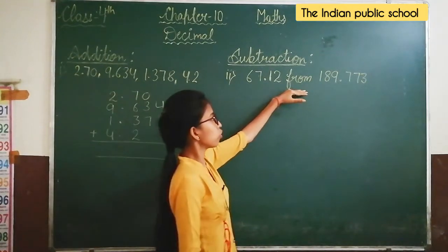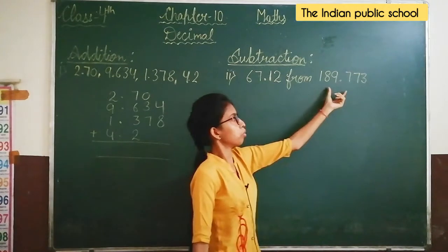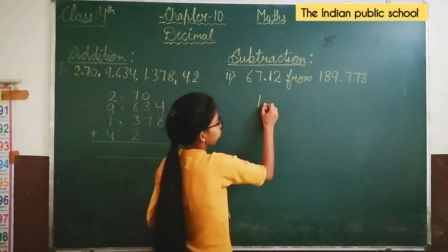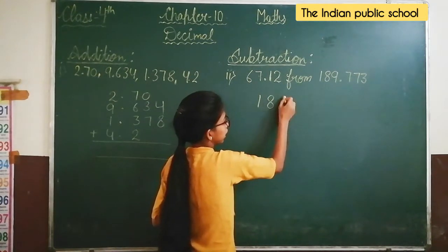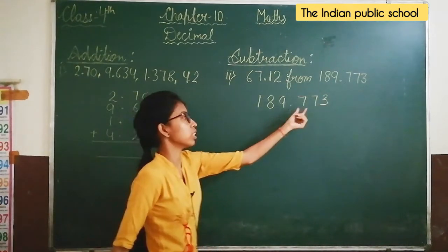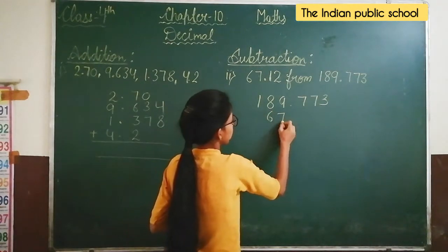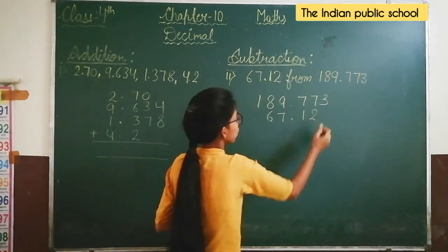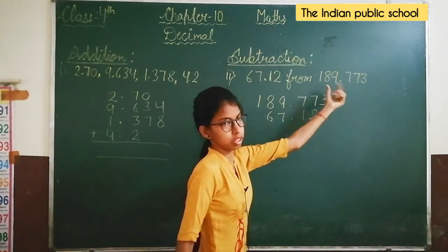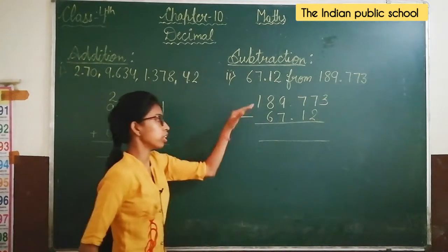So what is the meaning of this form? This number is greater than that number, so we will take the greater number first and then the smaller number. We will put the first number 189.773, and the next number is 67.12. Because we have to subtract this number from that number.